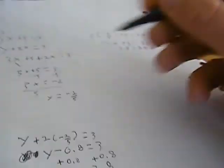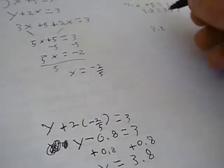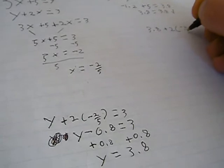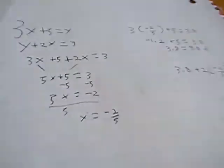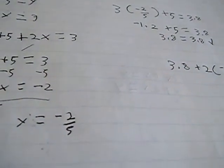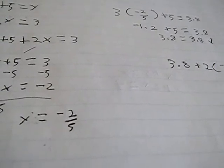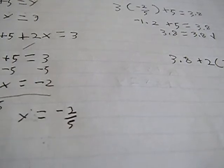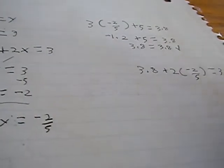Now we will check our second one. So, 3.8 plus 2 times negative 2 fifths will be equal to 3. 2 times negative 2 fifths is equal to negative 0.8.